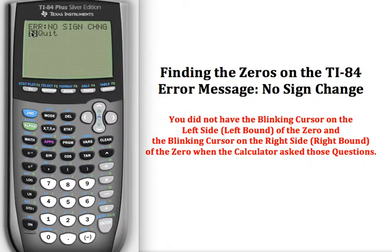And then there is that message no sign change. And it is all because the cursors are not in the right spot. Those blinking cursors are not in the right spot when the calculator asks those questions. Let's go ahead and hit one to quit out of there. Go back to my graph.